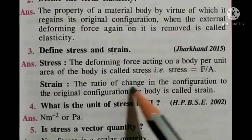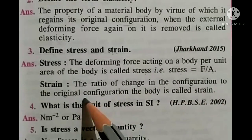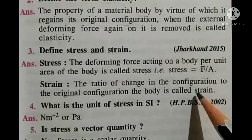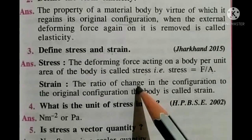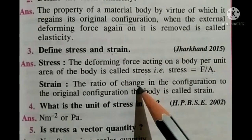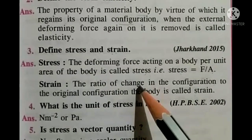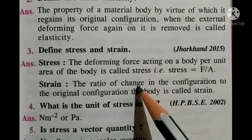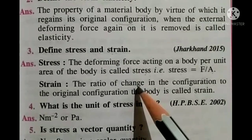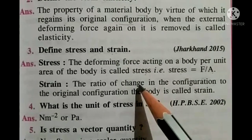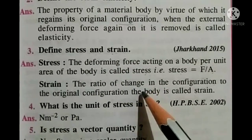Strain is the ratio of change in the configuration to the original configuration of the body. When we apply a deforming force on a body — for example, when we stretch a spring — its length increases. The ratio of the new configuration to the original configuration is known as strain.